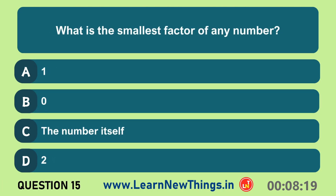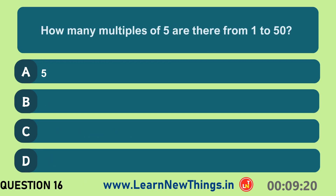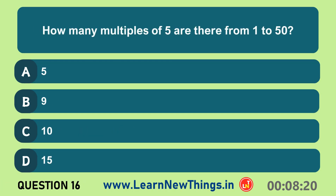What is the smallest factor of any number? One. How many multiples of 5 are there from 1 to 50? Ten.